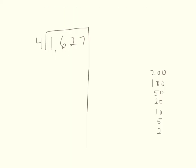For our next practice problem, I'd like you to write this down with me on your scratch paper or whiteboard. Go ahead and hit pause, and when you're ready start up again. Now we're going to start by multiplying our divisor, which is 4, by all the numbers on our list.